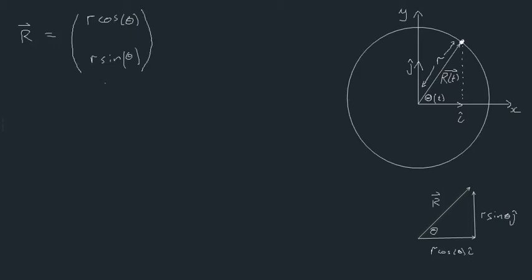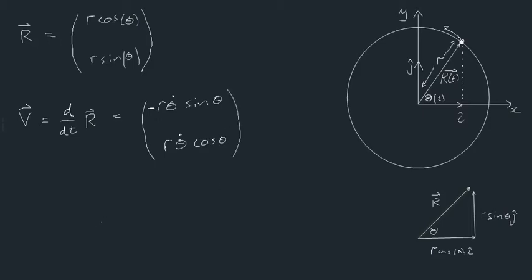Now let's figure out the velocity of our particle. Intuition tells us it's roughly tangential, but formally, velocity is defined as the displacement vector differentiated with respect to time: dR/dt. That simplifies to minus r·θ̇·sinθ in the i direction, plus r·θ̇·cosθ in the j direction. We now have a good understanding of velocity in terms of i and j.